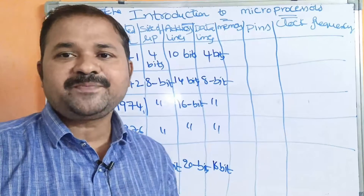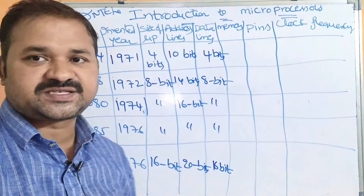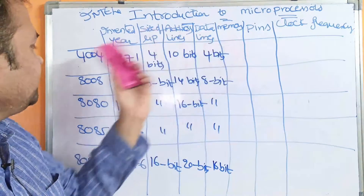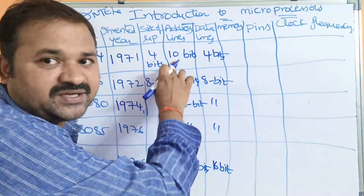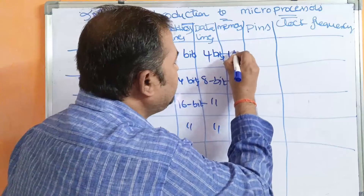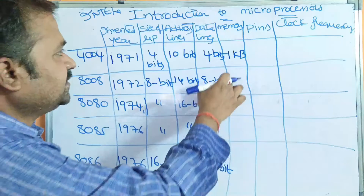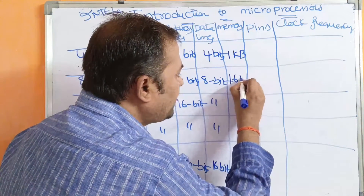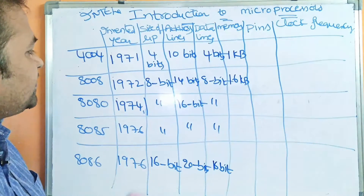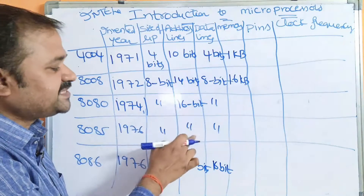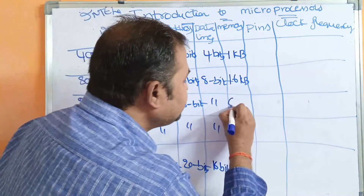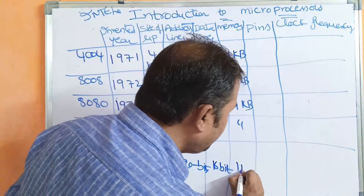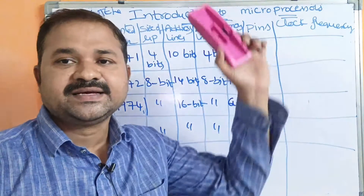Memory capacity always depends on the size of the address bus. For 4004, the address bus is 10 bits, so maximum memory is 2^10 = 1 kilobyte. For 8008, the address bus is 14 bits, so 2^14 = 16 kilobytes. For 8080 and 8085, the address bus is 16 bits, so 2^16 = 64 kilobytes. For 8086, the address bus is 20 bits, so 2^20 = 1 megabyte of main memory.